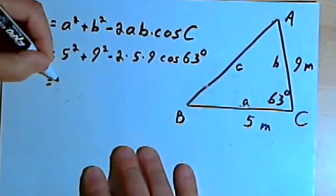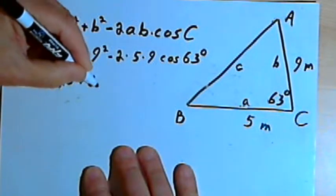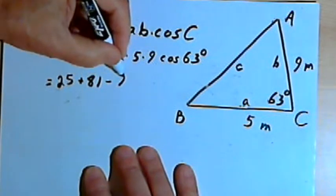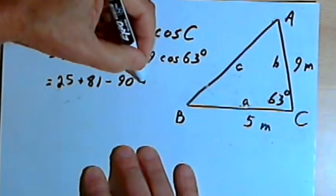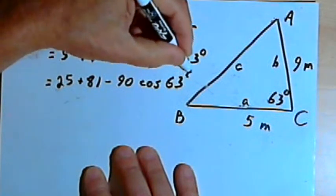Okay, 5-squared is 25, and 9-squared is 81, and 2 times 5 is 10, 10 times 9 is 90. That's going to be negative 90 times the cosine of 63 degrees.